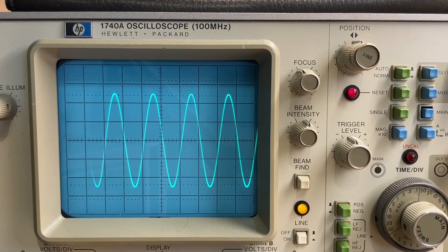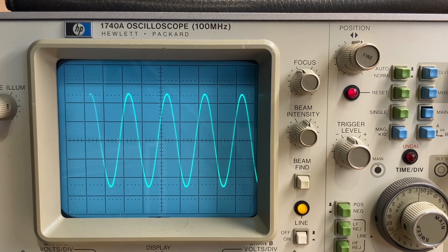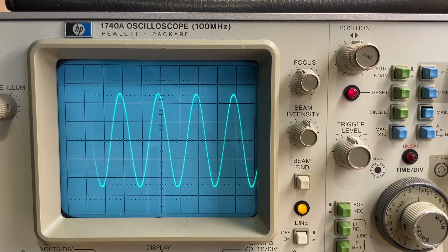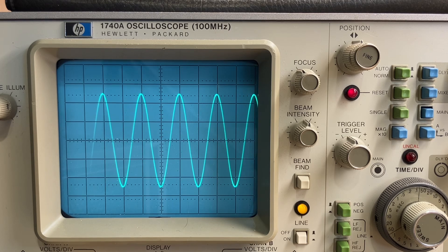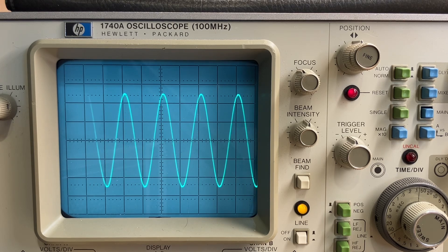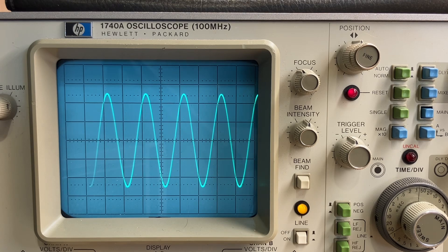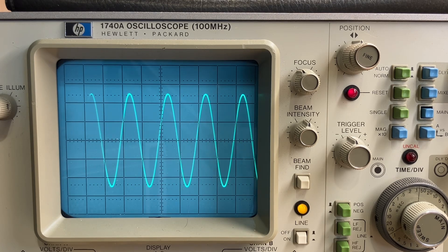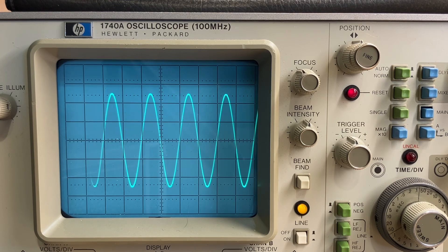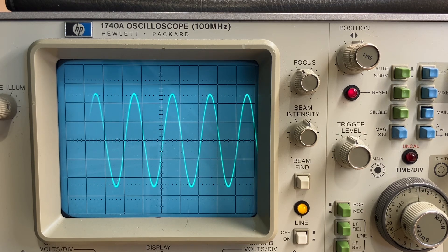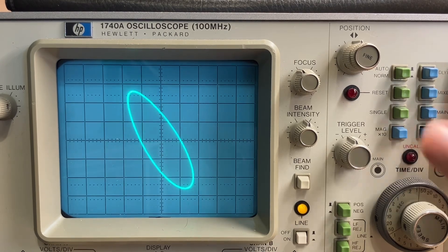So here we're looking at the GPSDO input on channel A on my scope and the output of my 10 megahertz 3325A set to 10 megahertz is on channel B of the scope. So we're looking at channel B, but we're triggering on the GPSDO signal on channel A. And if we take a look, you can see that the output of the 3325 drifts by about, looks like one cycle every five seconds or so. So it's off by about 0.2 Hertz, which is quite a bit, actually, I expected it to be less than that.